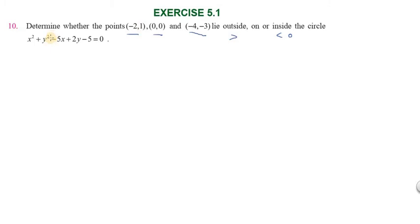First point: (-2,1). Substitute: (-2)² + (1)² - 5(-2) + 2(1) - 5 = 0.